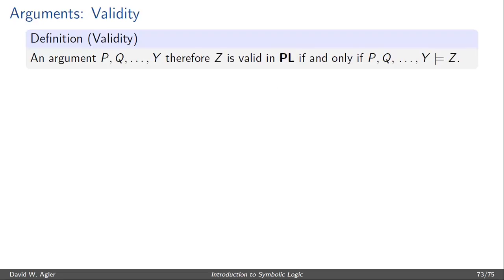Let's start with the definition of validity. We can define validity by saying that an argument P, Q, Y, therefore Z, where P, Q, and Y are the premises and Z is the conclusion,